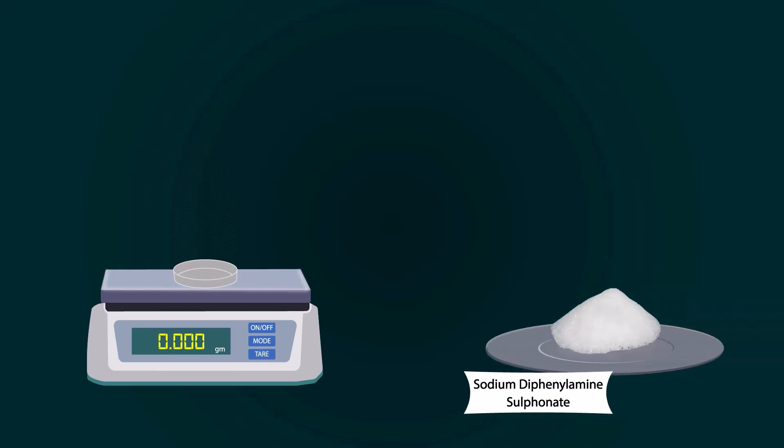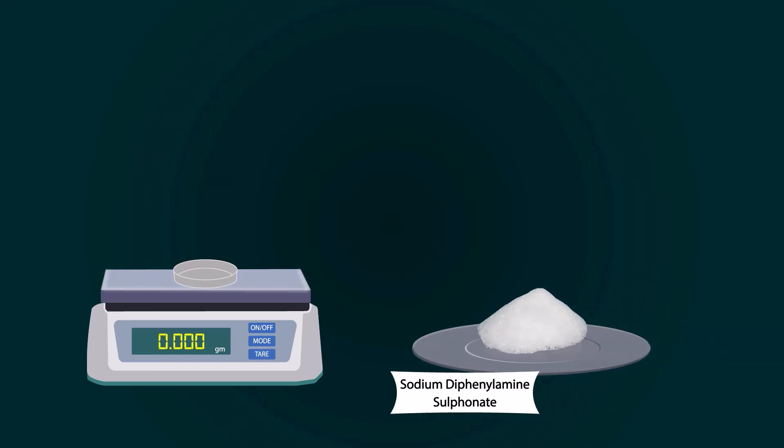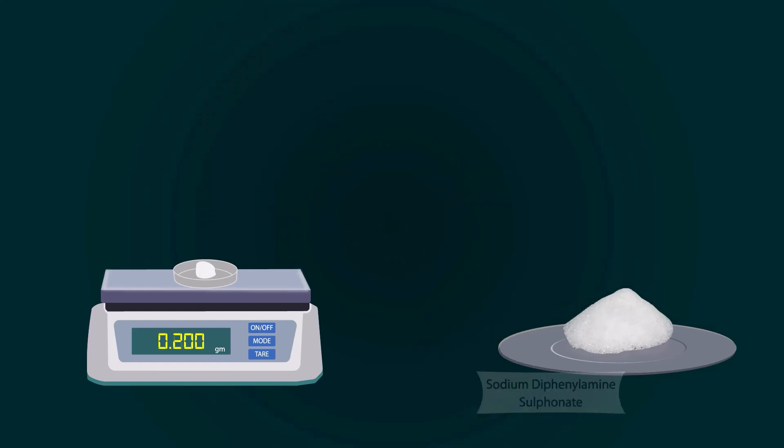Now take sodium diphenylamine sulfonate chemical from the stock bottle. You can put sodium diphenylamine sulfonate into the petri dish with the help of a spatula. Weigh precisely up to 0.2 grams.